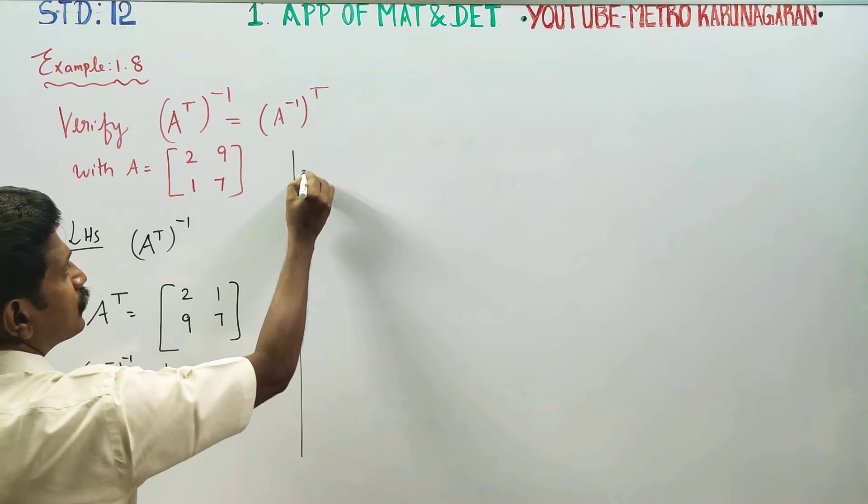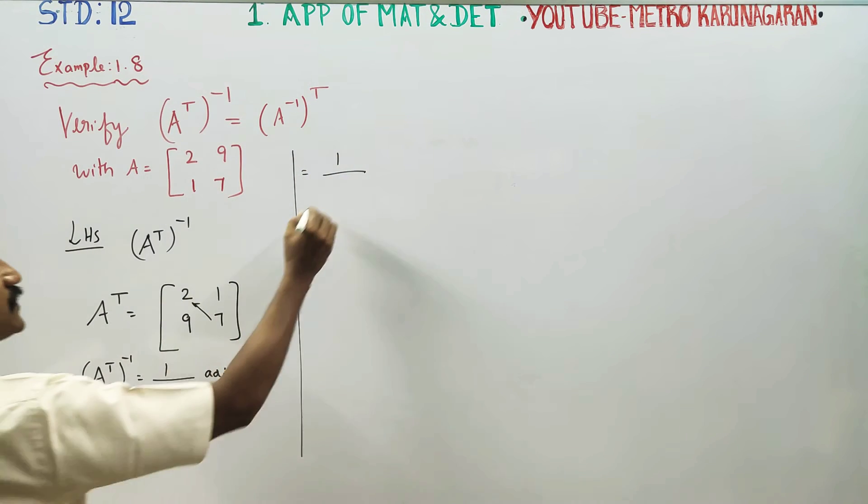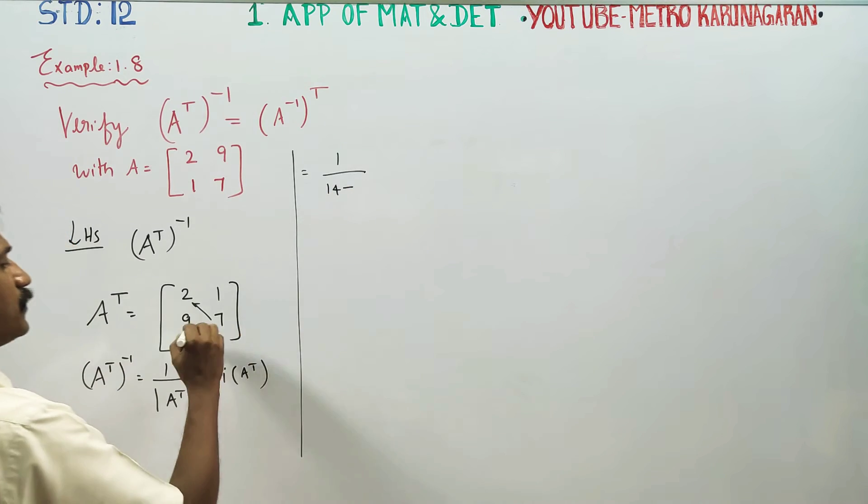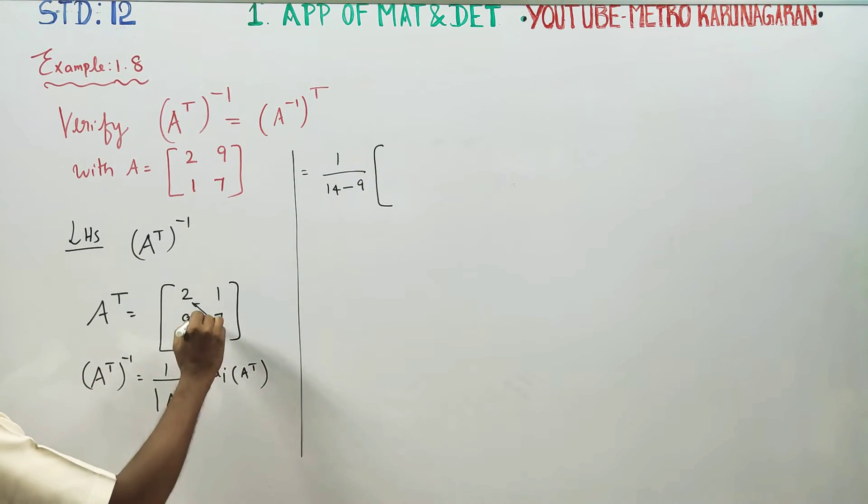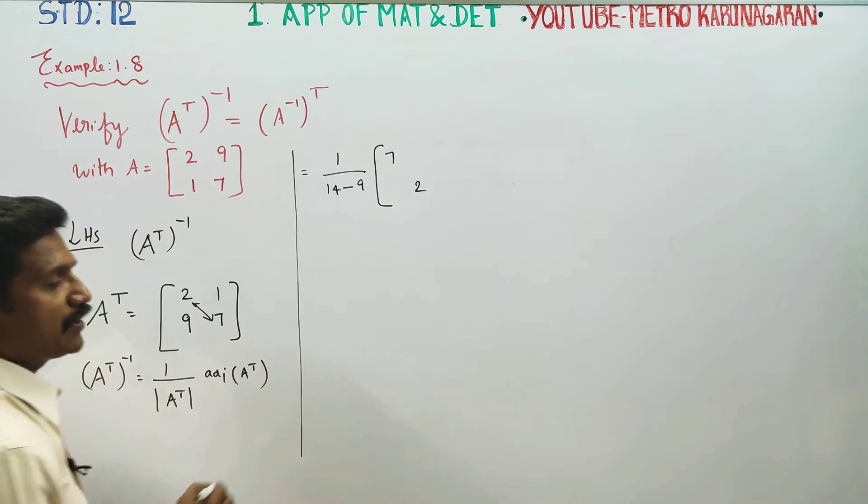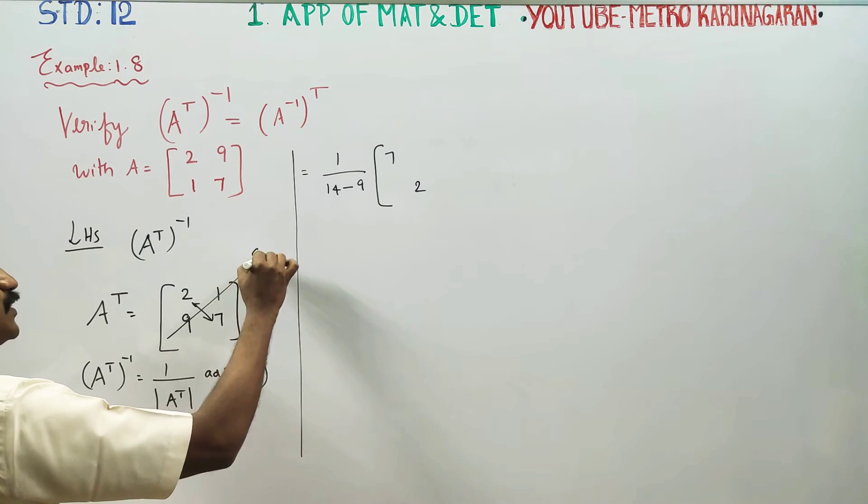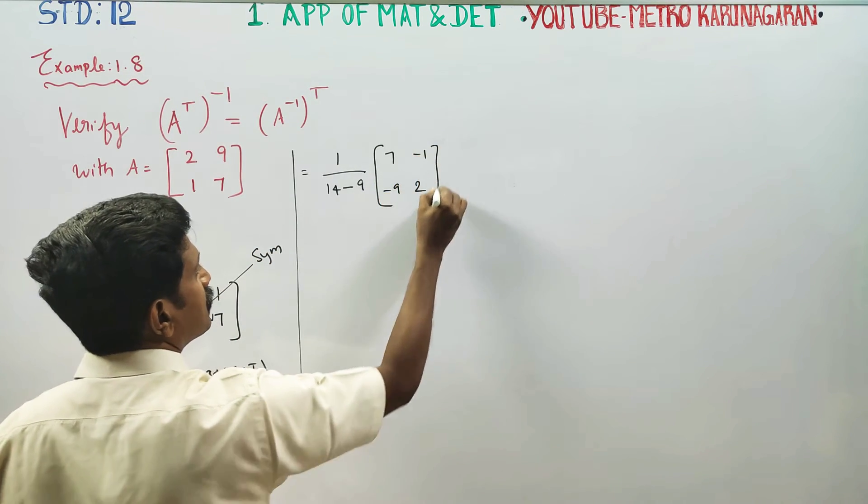Fine, is equal to 1 by determinant, right hand side minus left hand side, 14 minus 9 ones are 9, into adjoint A. Adjoint A is now, you have to interchange. 7 is equal to 2, you have to write symbols, symbols. So, minus 1, minus 9.